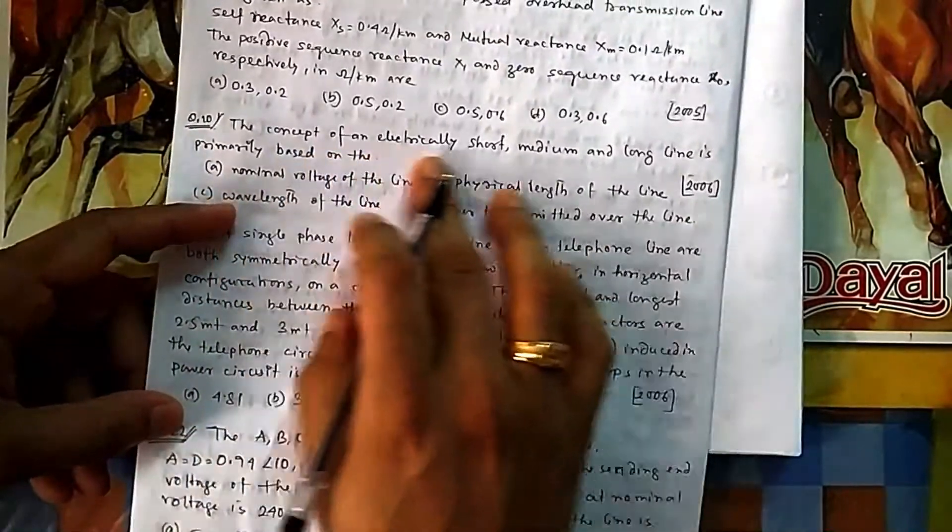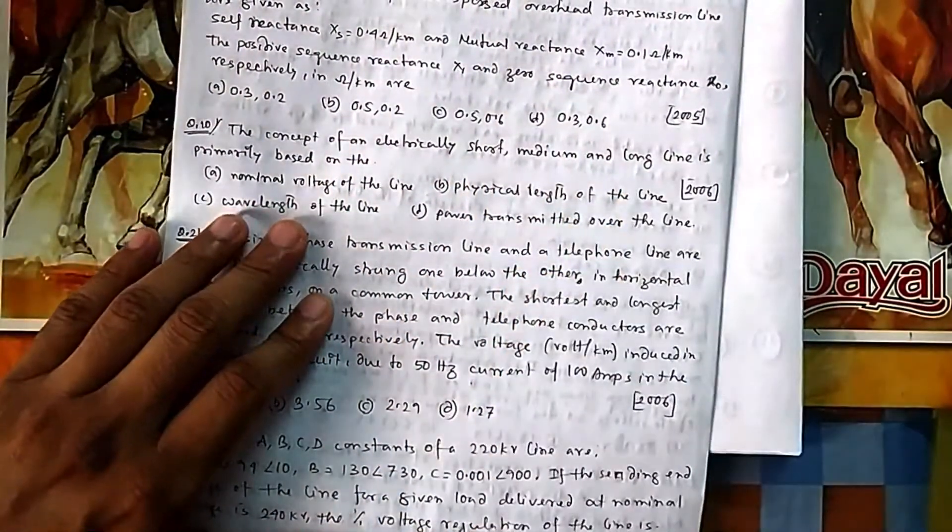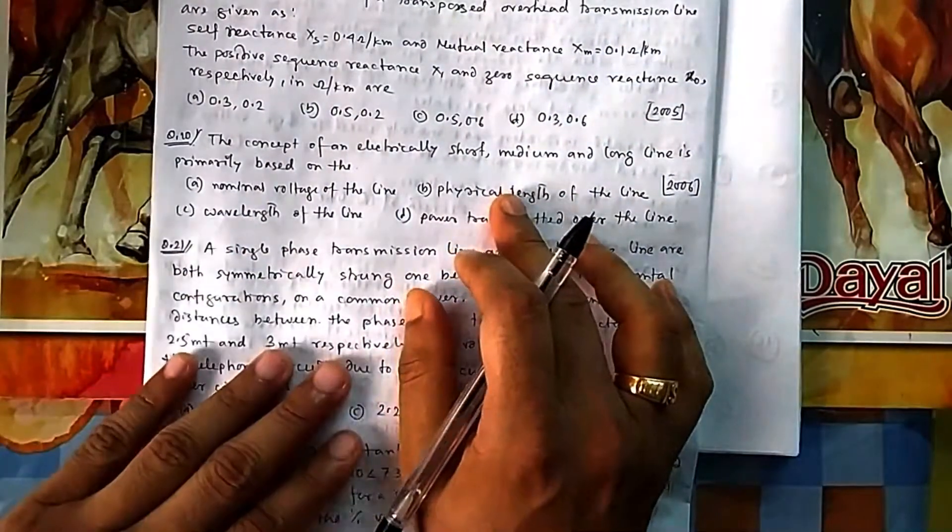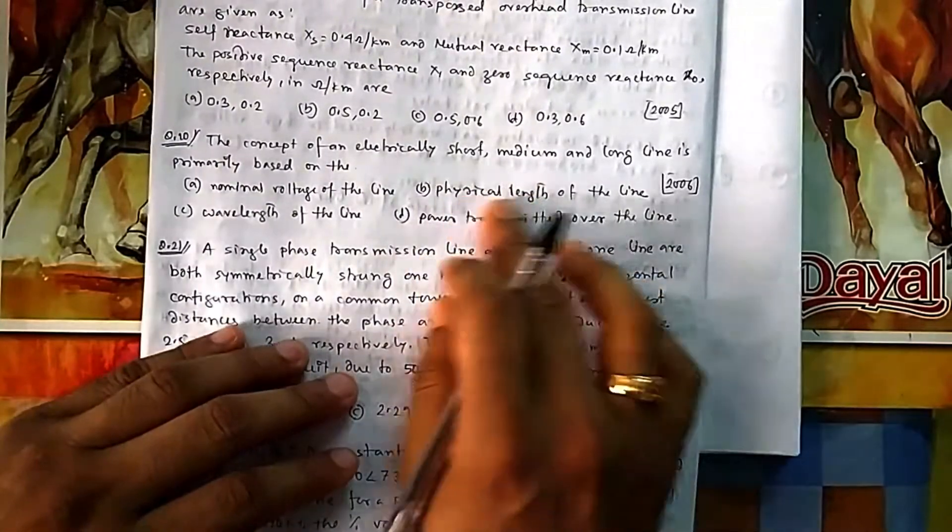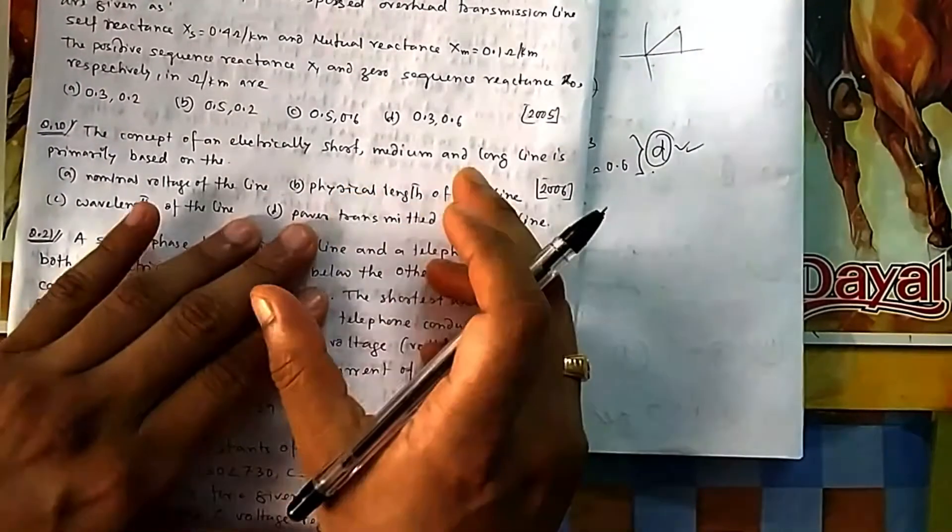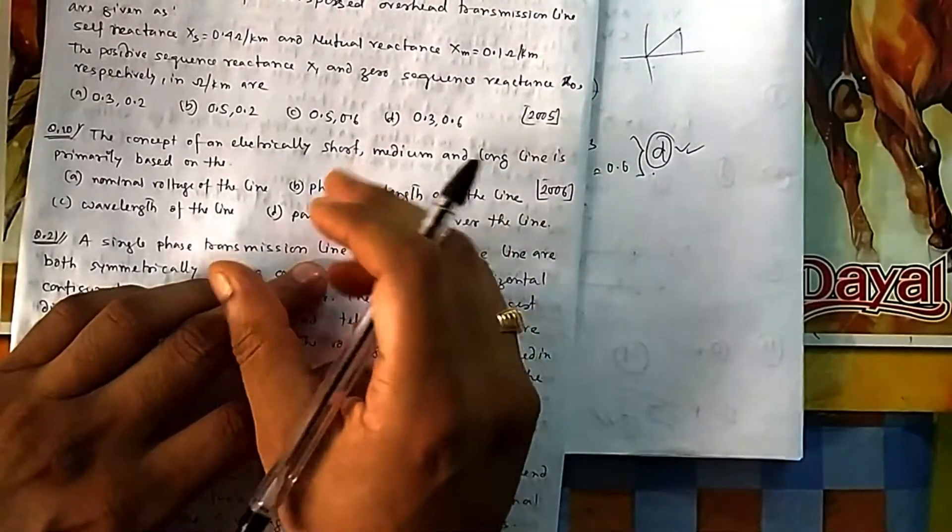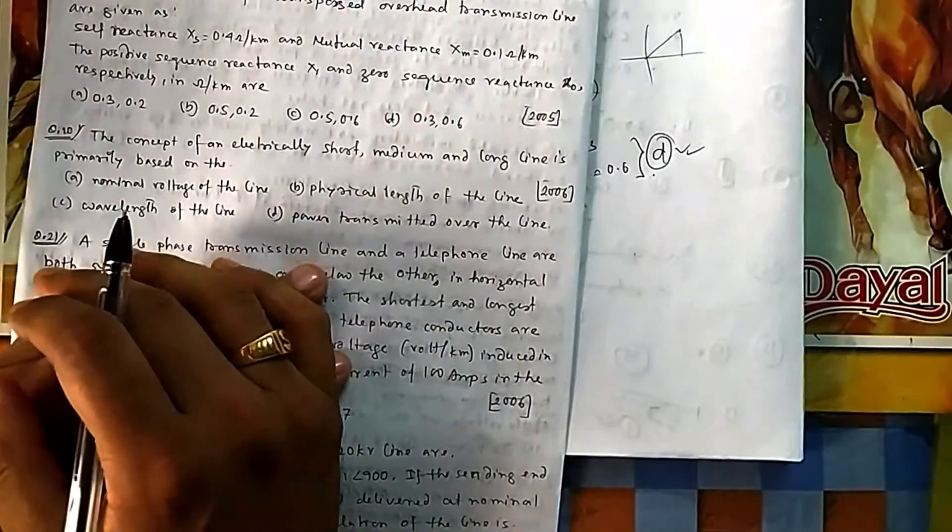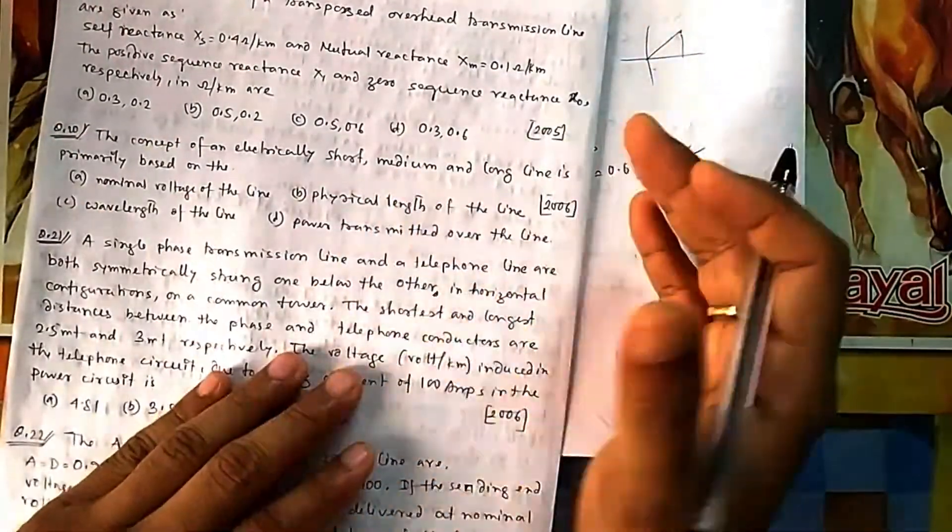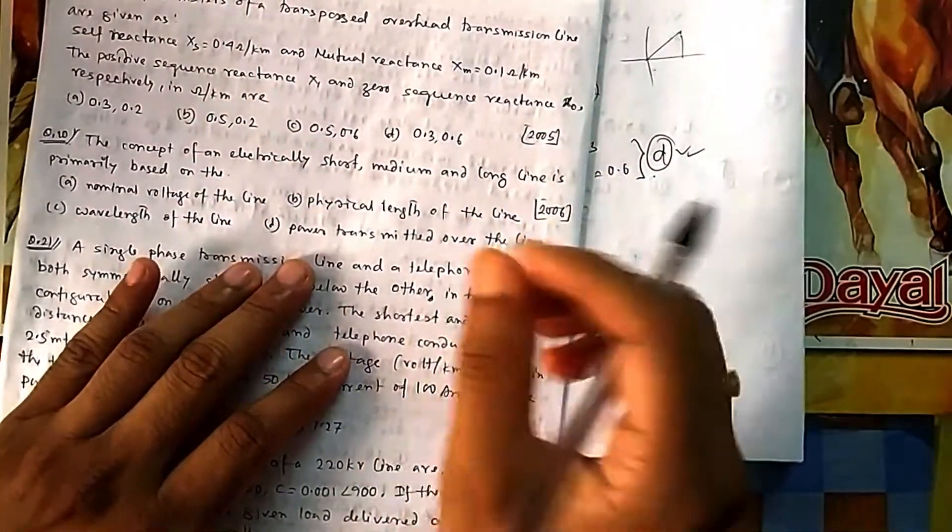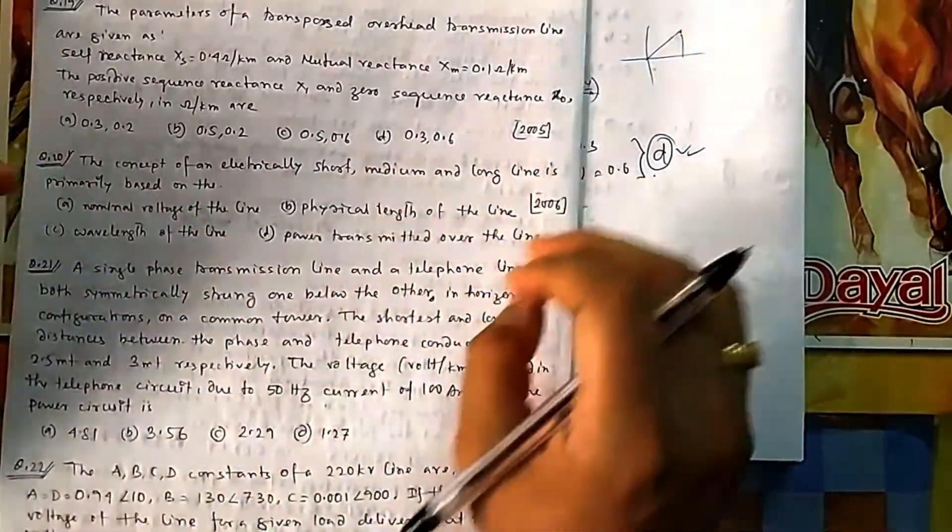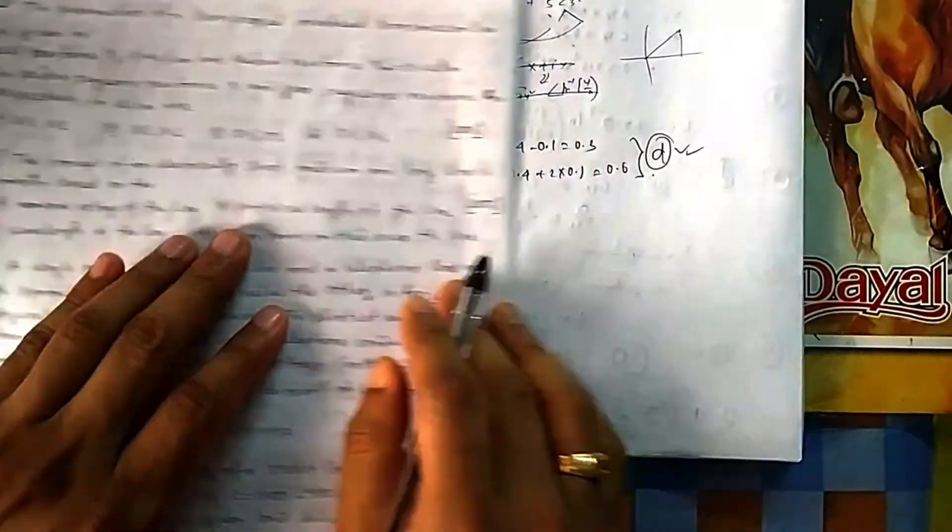Question 20: The concept of electrically short, medium, and long line is primarily based on what? Nominal voltage? No. Physical length? Yes. Wavelength? No. Power transmission over line? No. It is actually physical length, because on the basis of length, the effect of capacitance is considered. You've seen examples where length was 50 km but frequency increased to 500 Hz, so your 50 km looked like 500 km because capacitance effects cannot be neglected. That's why it's basically the length of the line and what frequency we're operating at. On that basis, you determine whether to consider C, and whether to use lumped or distributed C. So it's physical length, option B.